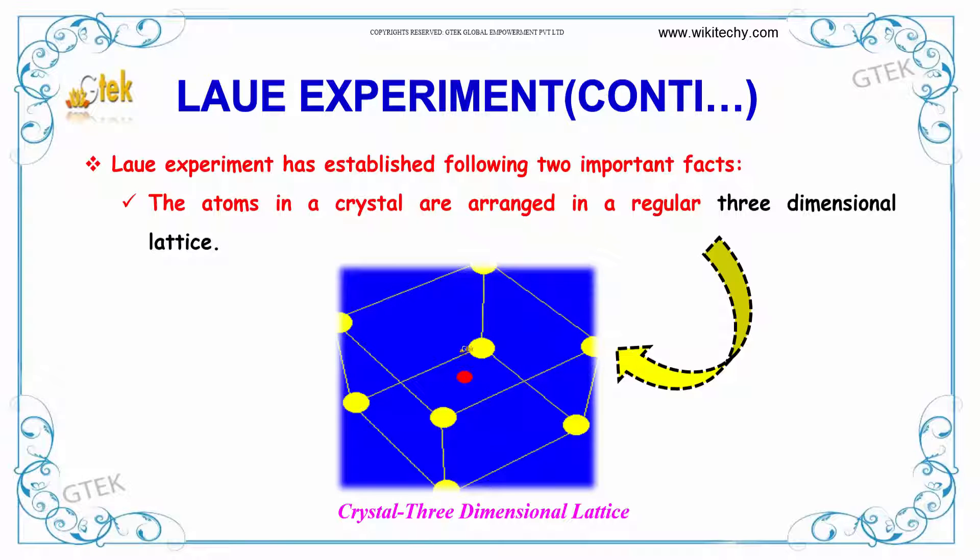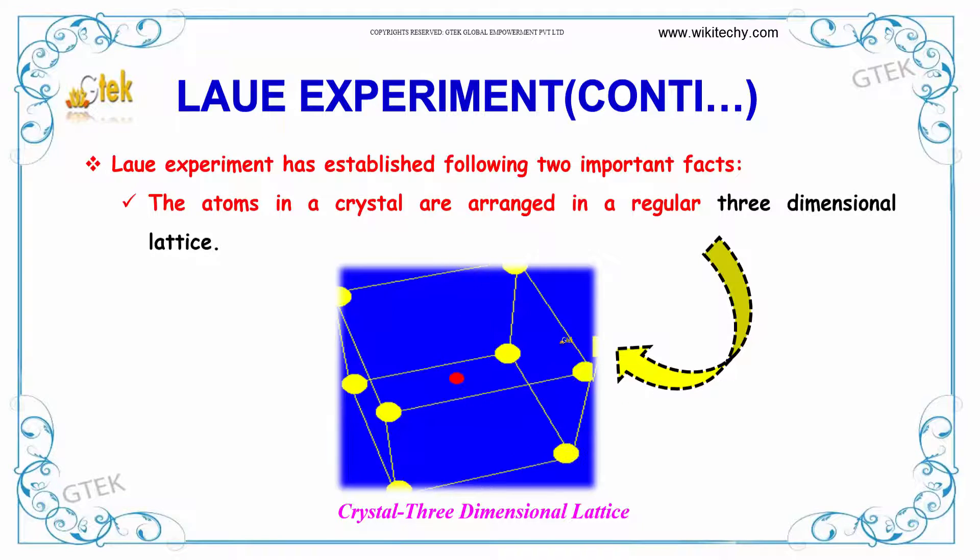The atoms in a crystal are arranged in a regular three-dimensional lattice.